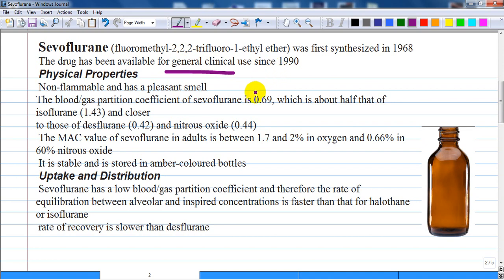How about physical properties? It is non-flammable and has a pleasant smell, which is very important. The blood gas partition coefficient of sevoflurane is 0.69, which is about half that of isoflurane which is 1.43.